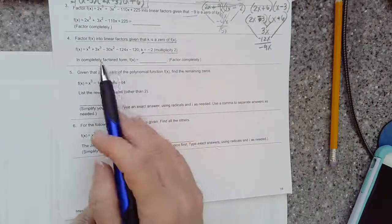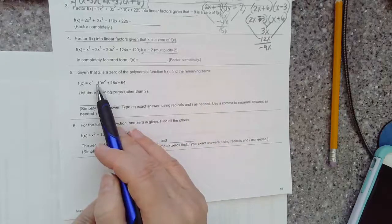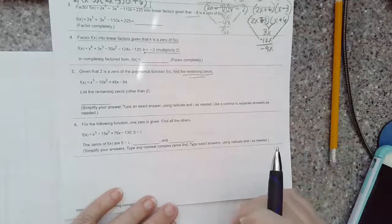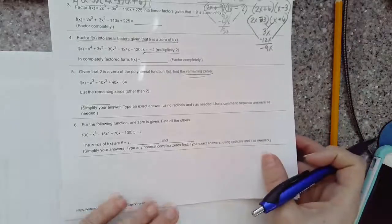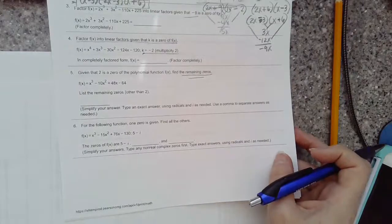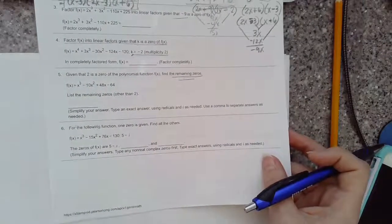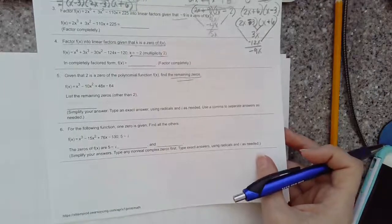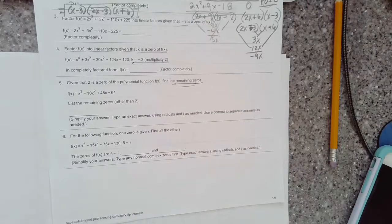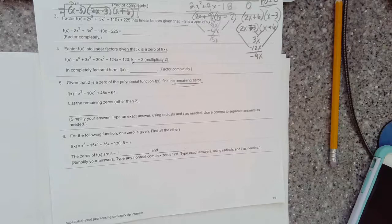So I'm on to number five. It tells us that given that two is a zero of the polynomial, find the remaining zeros. This clue is different from the last segment. The first four were factorable. Every time I used synthetic division, I got a remainder of zero. But now it doesn't say the word factor, it says just find the remaining zeros. That's my clue that I may have to use the quadratic formula.